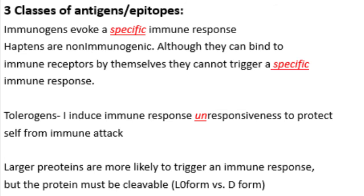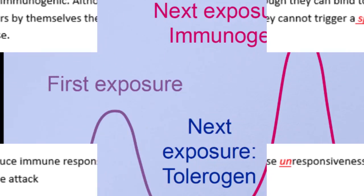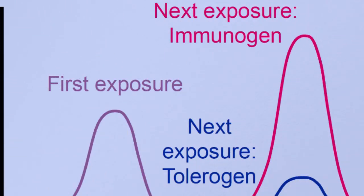Haptens cannot trigger a specific immune response all by themselves — they have to be attached to something. There's also something called tolerogens. Looking at a graph of immune response: on first exposure, your body has a particular response. The innate system gives roughly the same response on re-exposure, but the adaptive immune system will produce a larger response, which is why after getting chicken pox you can fight it off faster upon re-exposure.